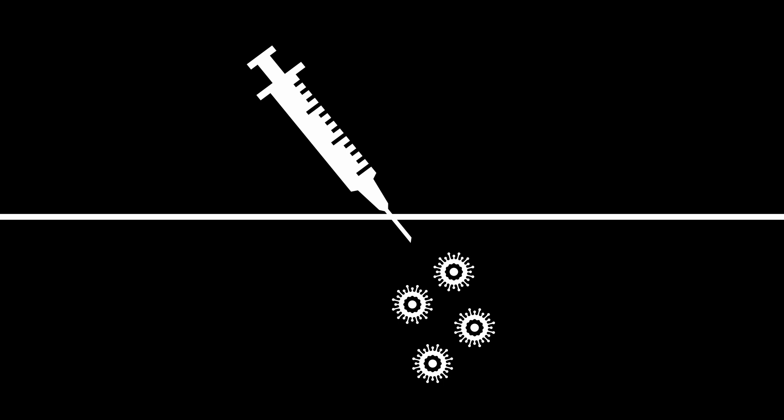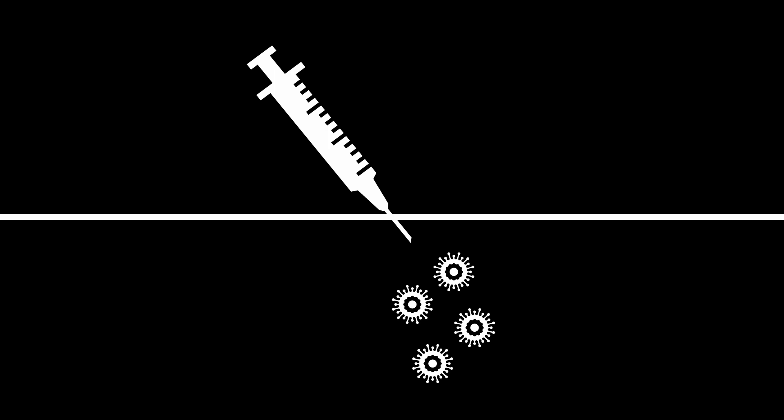Whole virus vaccines are a more traditional type of vaccine. They contain weaker or inactive modified versions of the virus. When whole virus vaccines are injected into the body, the weaker virus will trigger an immune response without causing serious disease-related symptoms.